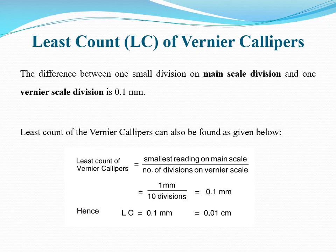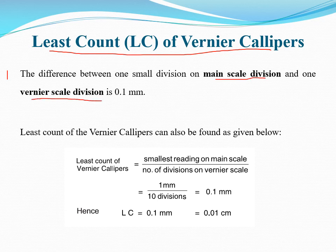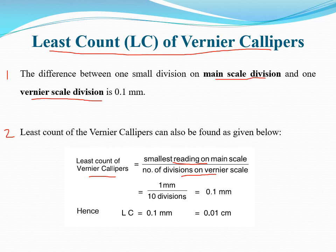Least count is the term associated with all types of measuring instruments. As the name suggests, it is the minimum reading that can be taken by any measuring instrument. The least count of Vernier Calipers can be defined in two ways. Number 1: the difference between one small division on the main scale and one vernier scale division is 0.1 mm. Number 2: least count equals smallest reading on main scale divided by number of divisions on vernier scale. The smallest reading on main scale equals 1 mm and there are 10 divisions on vernier scale.